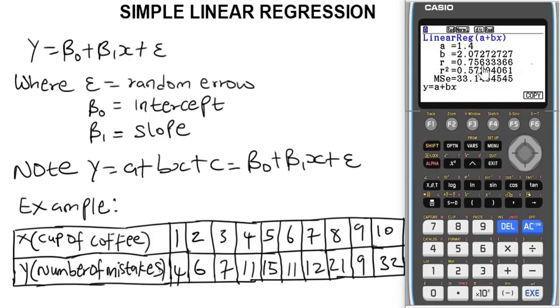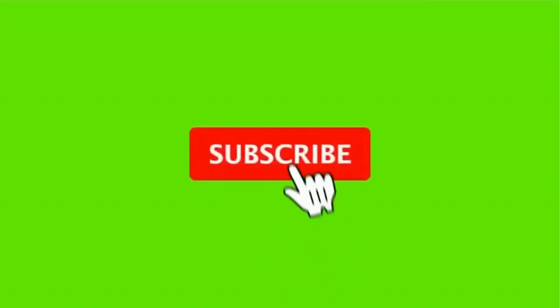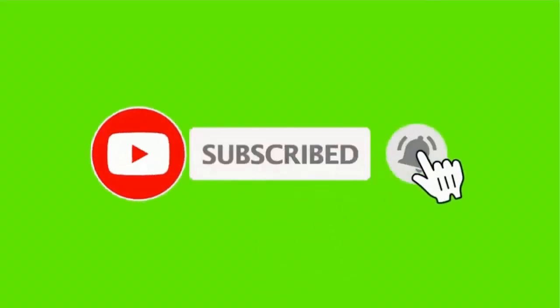This is basically how you can solve problems involving simple linear regression with the Casio fx-CG50 graphical scientific calculator in seconds. If you learned something interesting from this video and you are new to the channel, ensure you hit the subscribe button now to subscribe to the channel for more videos like this. Also like, share, and comment on this video.